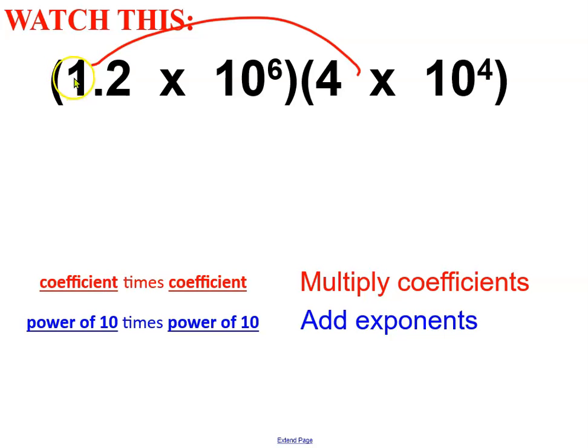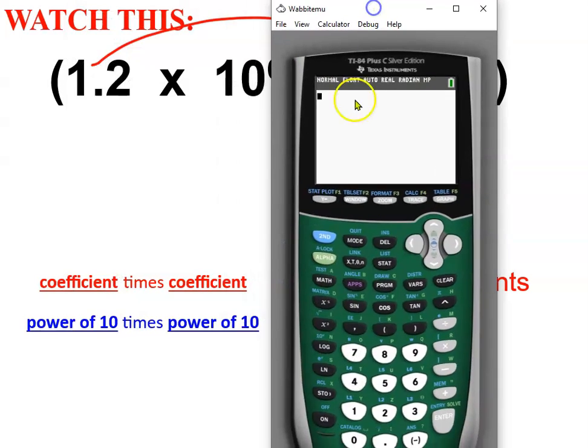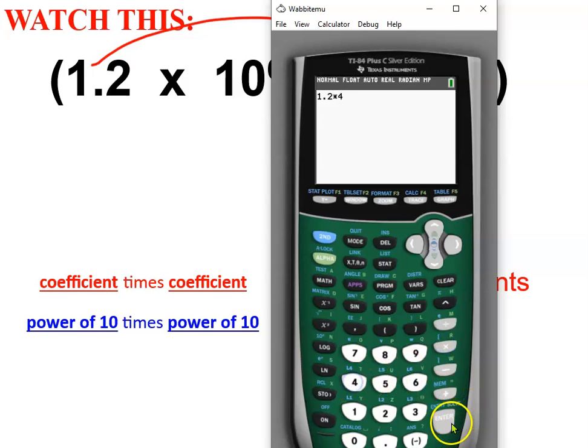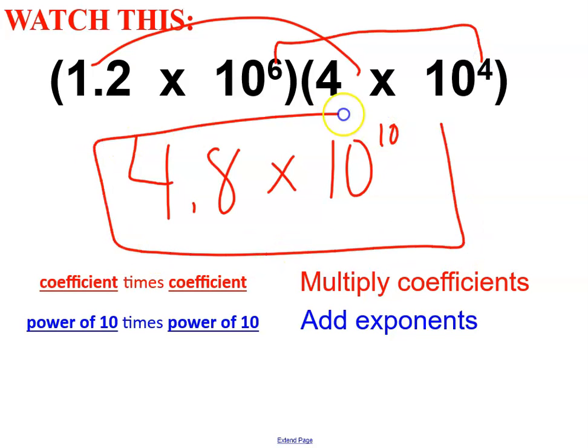Simply type your coefficients, 1.2 times 4. So on my handheld calculator, I'm going to type 1.2 times 4. And this will be my new coefficient, 4.8. The times sign is always there. The 10 is always there. And now it's time to add the exponents.